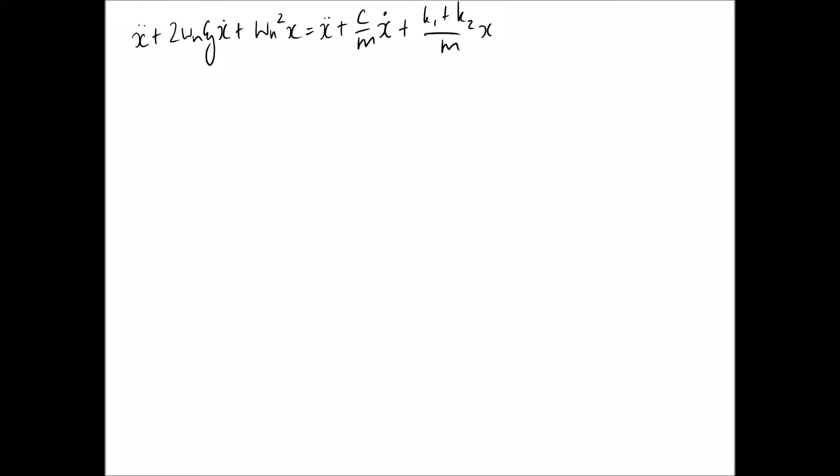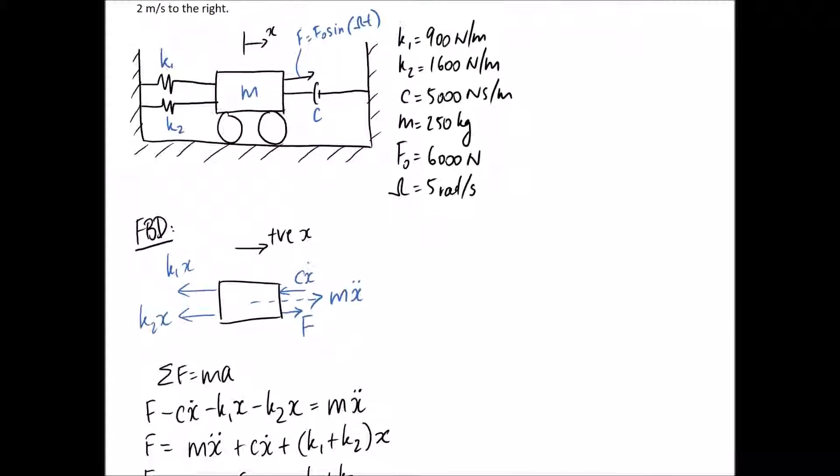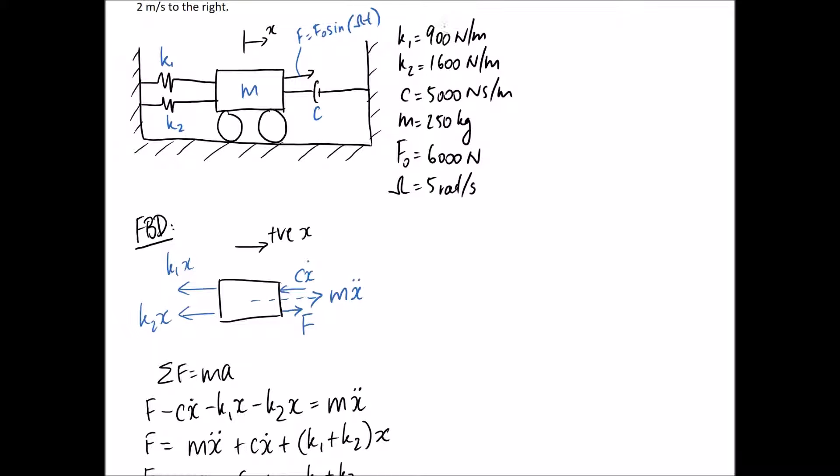Alright, so let's start with the x term. So for that we know omega n squared has to equal k1 plus k2 on m. And if I scroll back up here, we're given all the different values. So 900, 1600 and 250.